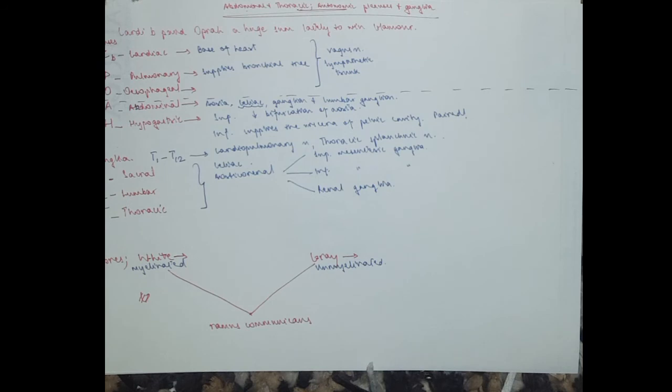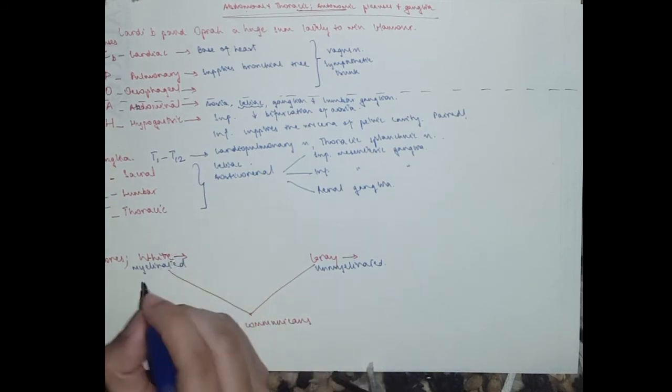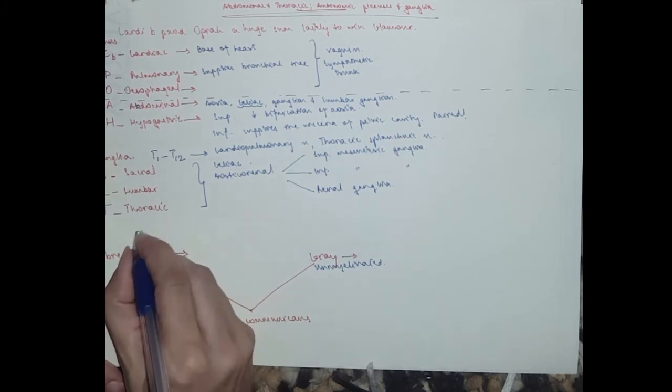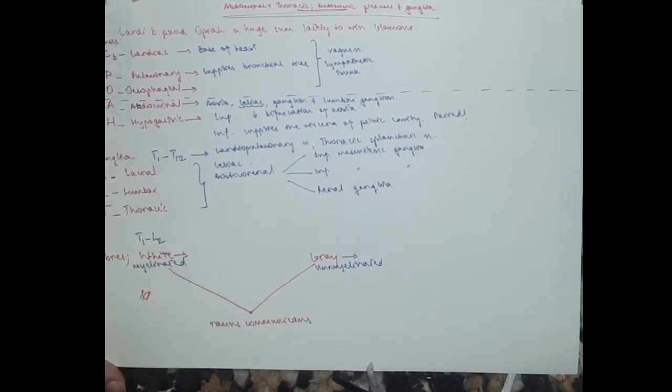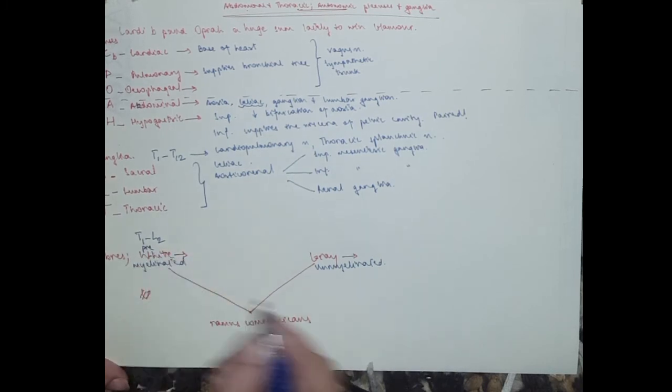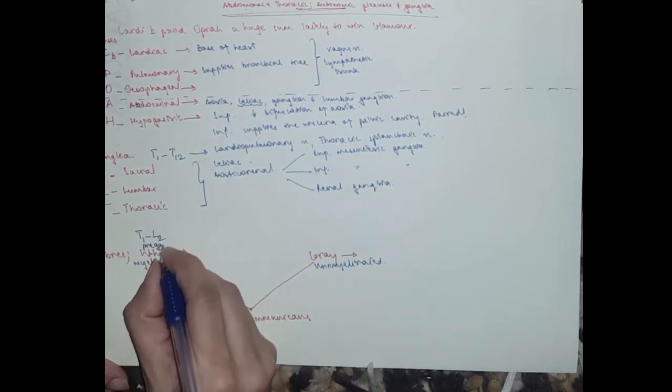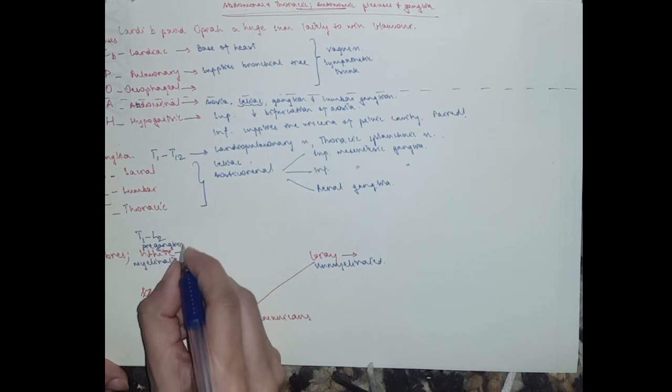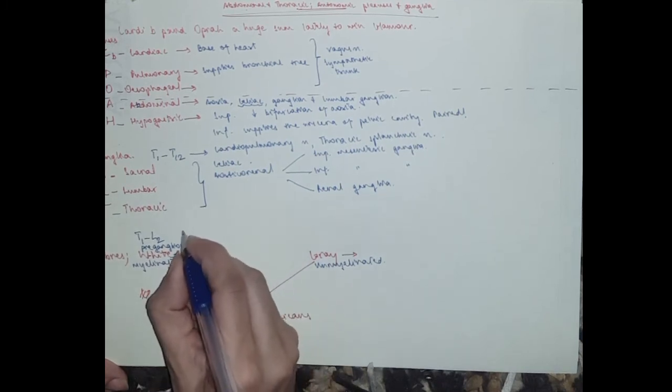Yeah, so the white ones go from T1 to L2. They carry the preganglionic, so they are preganglionic, which is why I put it first. Preganglionic nerve fibers from the spinal cord to the paravertebral ganglia.